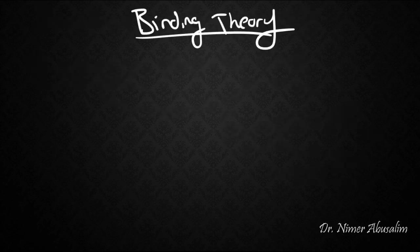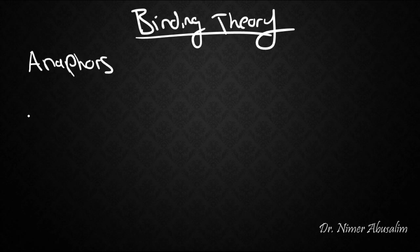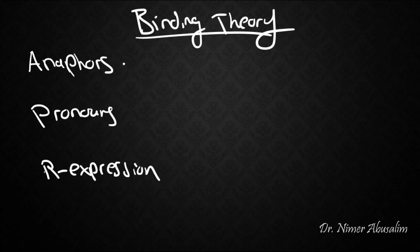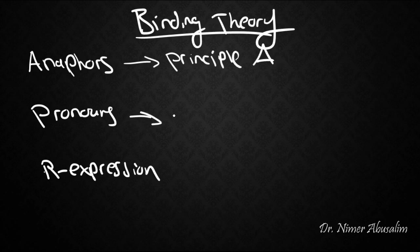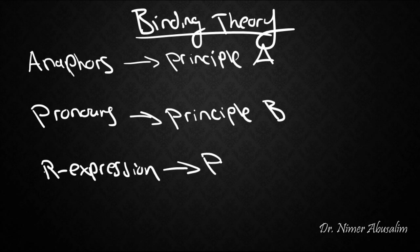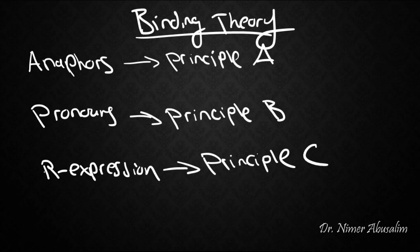That covers binding theory for this course. We talked about the three types of nouns: anaphors, pronouns, and R-expressions. Anaphors abide by Principle A, pronouns by Principle B, and R-expressions by Principle C. We also covered coindexation, c-command, what binding means, and the binding domain. That's all for binding theory — see you in the next lecture.